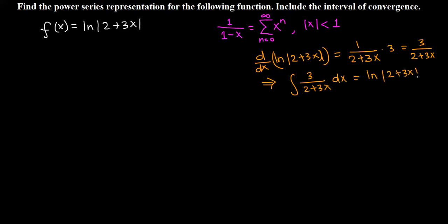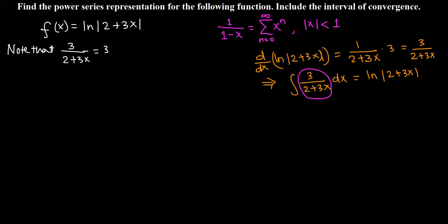That means the anti-derivative of 3 over (2 plus 3x) with respect to x is natural log of 2 plus 3x. So to find the power series for natural log of |2 plus 3x|, we rewrite the fraction 3 over (2 plus 3x) in the form of 1 over 1 minus x, find its power series, and then integrate with respect to x. We factor out 2 from the denominator: 3 over (2 plus 3x) equals 3 over 2 times 1 over (1 plus 3x over 2).